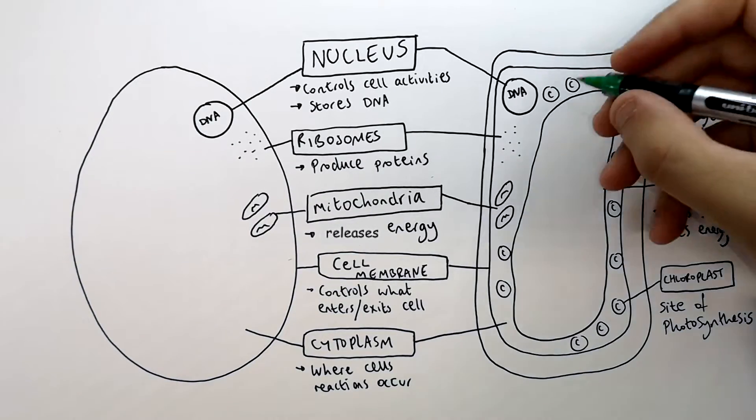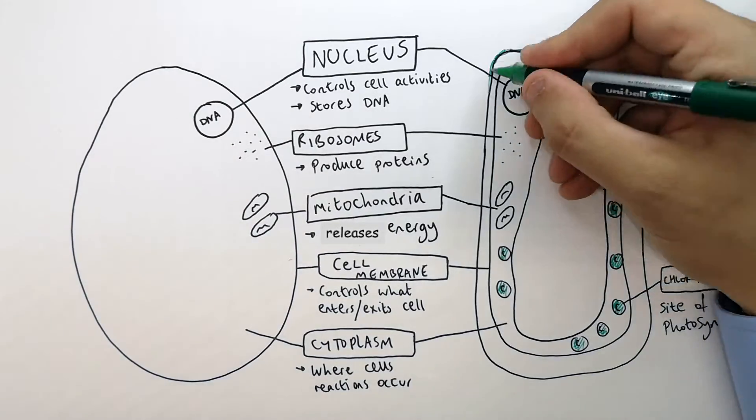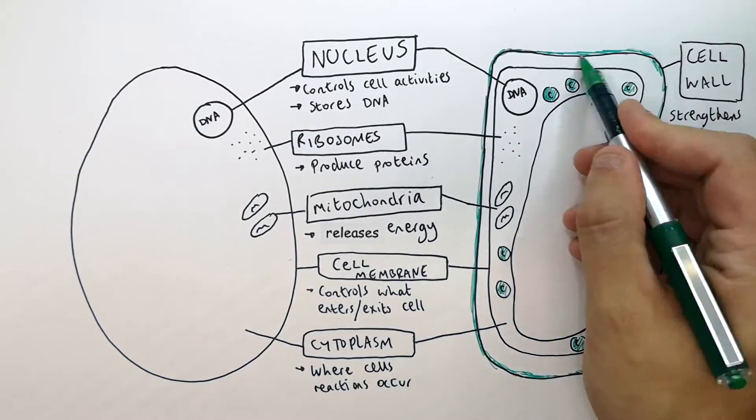So what I'm going to do now is highlight the different parts in green that are only in plant cells.